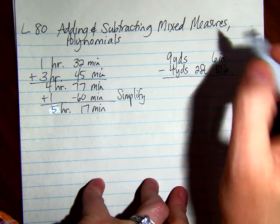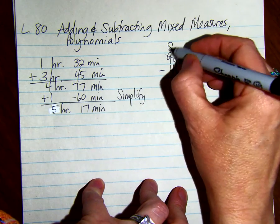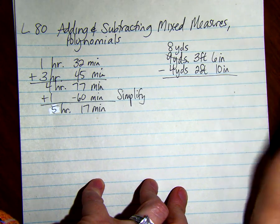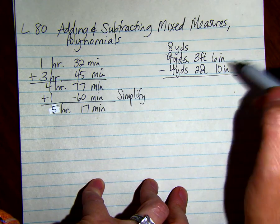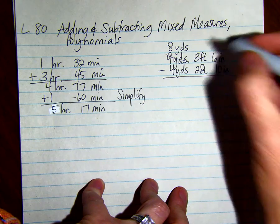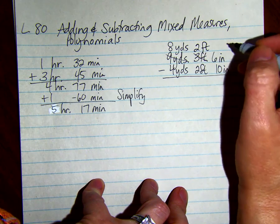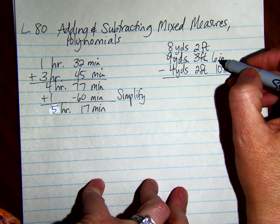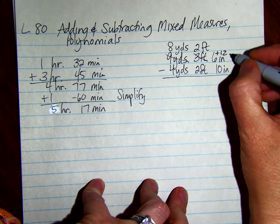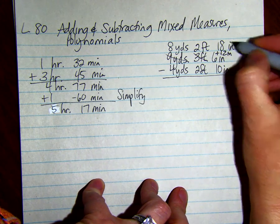Since there are 3 feet in 1 yard, we're going to take away 1 yard and call this 3 feet. Now we can borrow 12 inches from 1 foot. If we take away 1 foot, we have 2 feet and we're going to add 12 to 6 because that's how many inches are in 1 foot. So it's 18 inches.